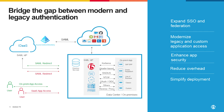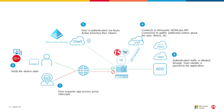The way the integration works is: a user will request access to an application. Access Policy Manager, serving as that identity-aware proxy, will intercept that request and then verify the device state. It will then connect with the root of trusted identity — Azure Active Directory — and determine what apps and resources that user is authorized to access. Access Policy Manager will also leverage Azure Active Directory's conditional access policies to further calculate risk.